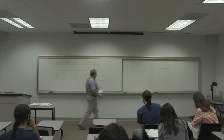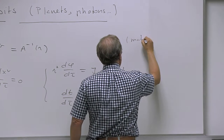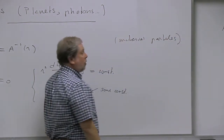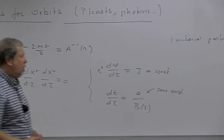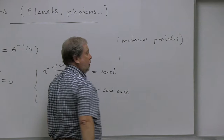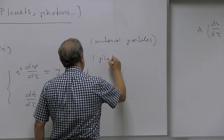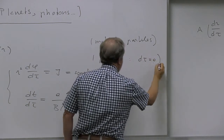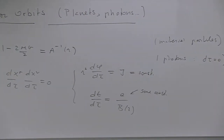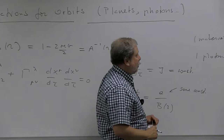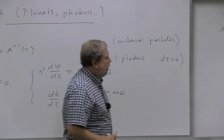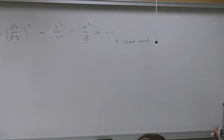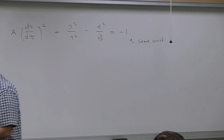This constant is -1 for material particles — if the number is not equal to 1 or -1, you don't get the correct Newtonian limit. This applies to material particles. For photons, where the mass is zero, we have to amend the description because d tau = 0, so we can't use d tau as a parameter. For particles with a finite mass m, this equation applies.